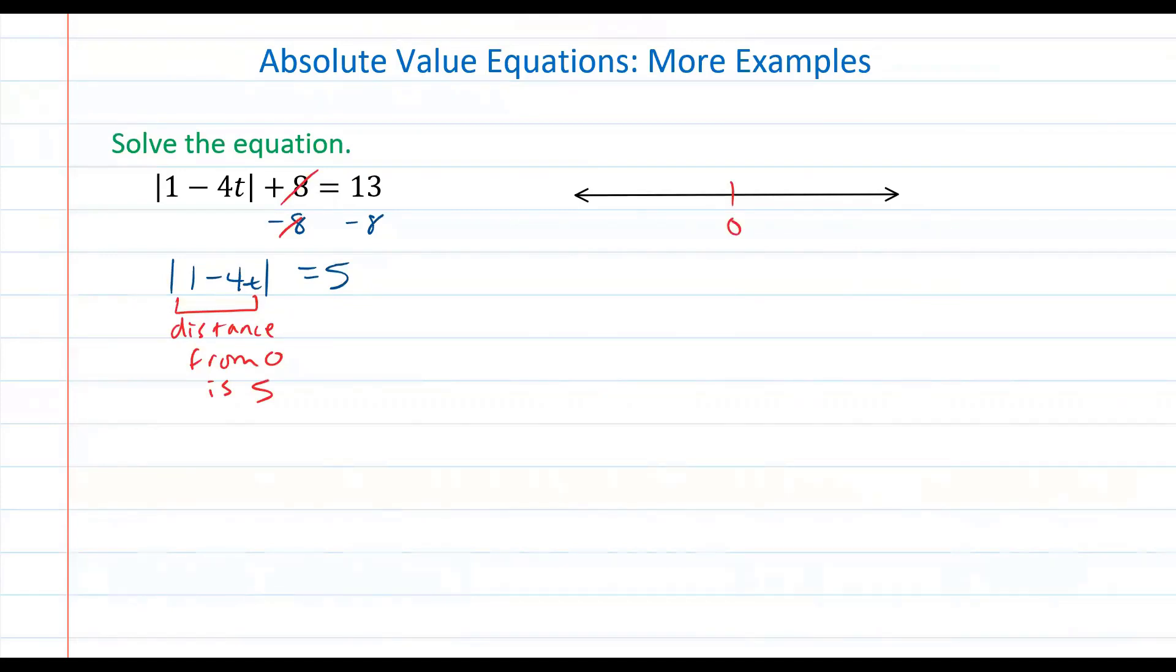What two values have a distance from 0 that is equal to 5? Well, we know 0 is here, and so 5 has a distance of 5 units from 0, but negative 5 also has a distance of 5 units from 0 on our number line. As a result, what we know is that this expression 1 minus 4t is equal to both of those two points on the number line.